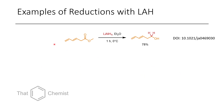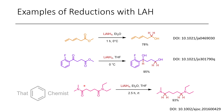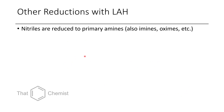Some examples of LAH reductions in the literature include one where a diene remains totally untouched while an ester gets reduced to an alcohol. In another case, a keto ester has both the ketone and the ester reduced to a diol. In a final case, a diamide is reduced to a diamine. As these examples illustrate, LAH is quite a powerful reductant.